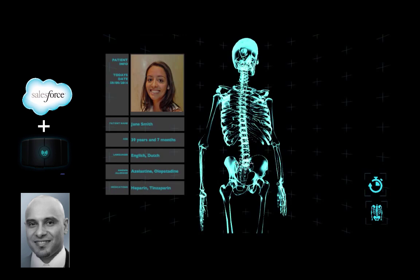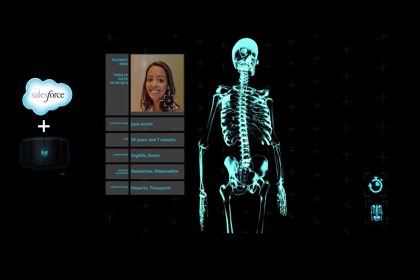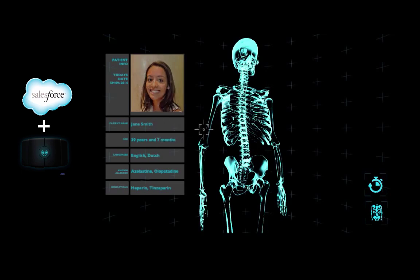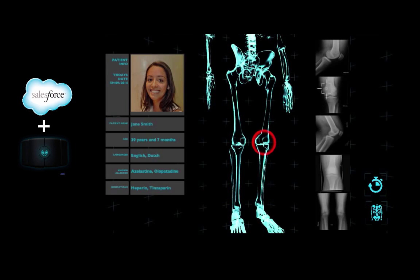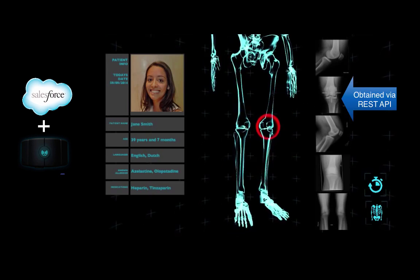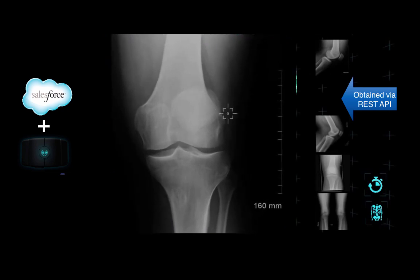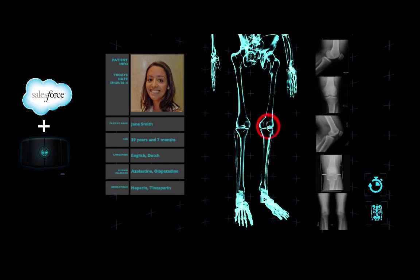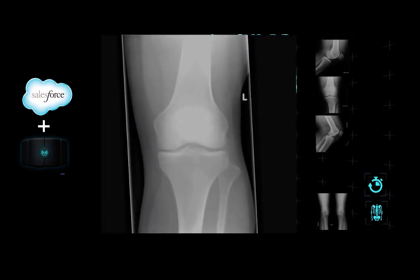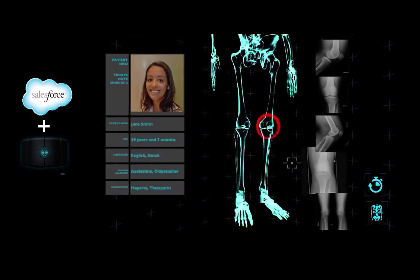In terms of integrating to Salesforce, the first component is the panel on the left. This is actually a Visual Force page being rendered in this 3D environment, which is called Unity 3D. We're able to render Visual Force and therefore present information directly from the platform. The other type of integration is the x-ray images — these are stored as attachments against the record in Salesforce, and we're retrieving them using the REST API. They're then manipulated and we can interact with them using the Mio gestures within this environment.